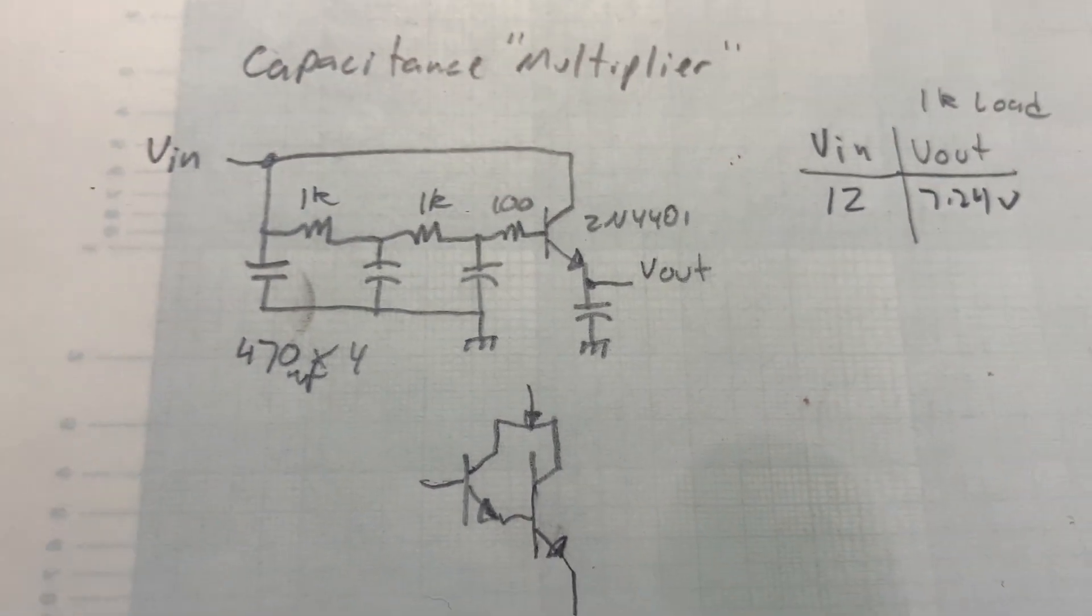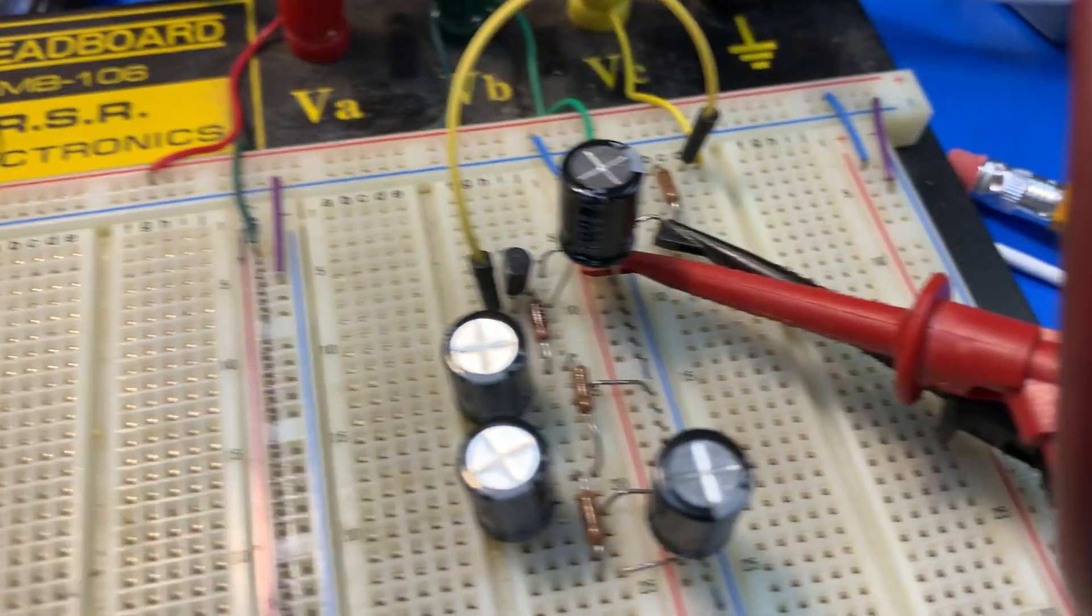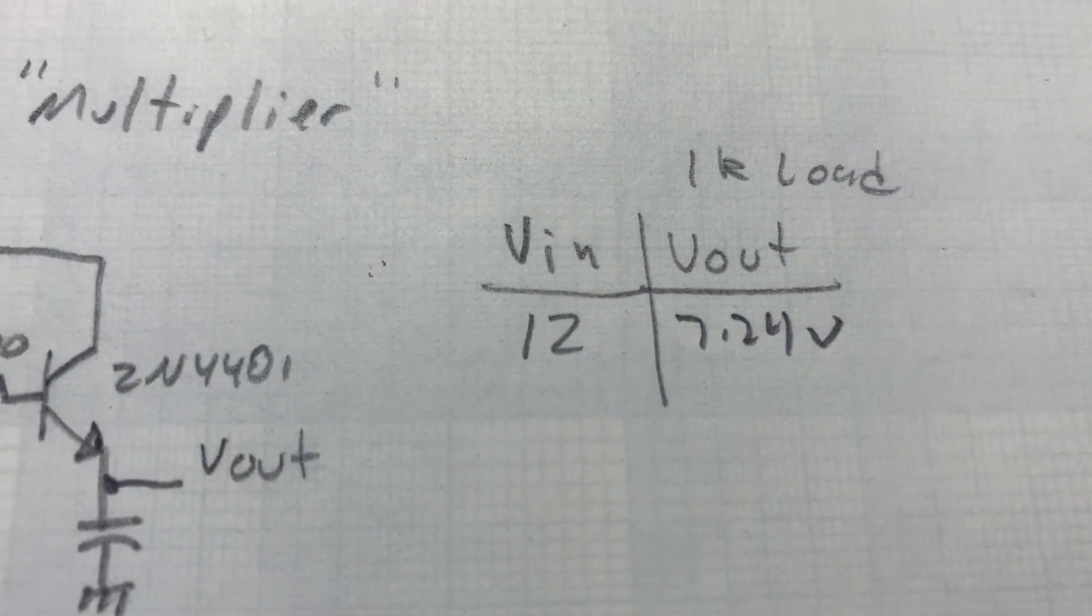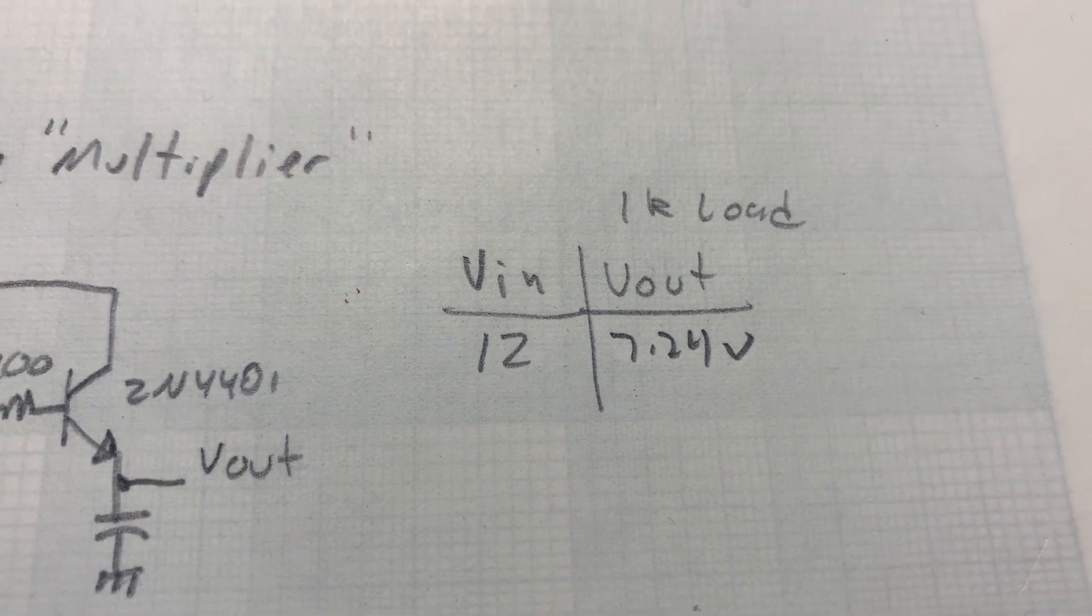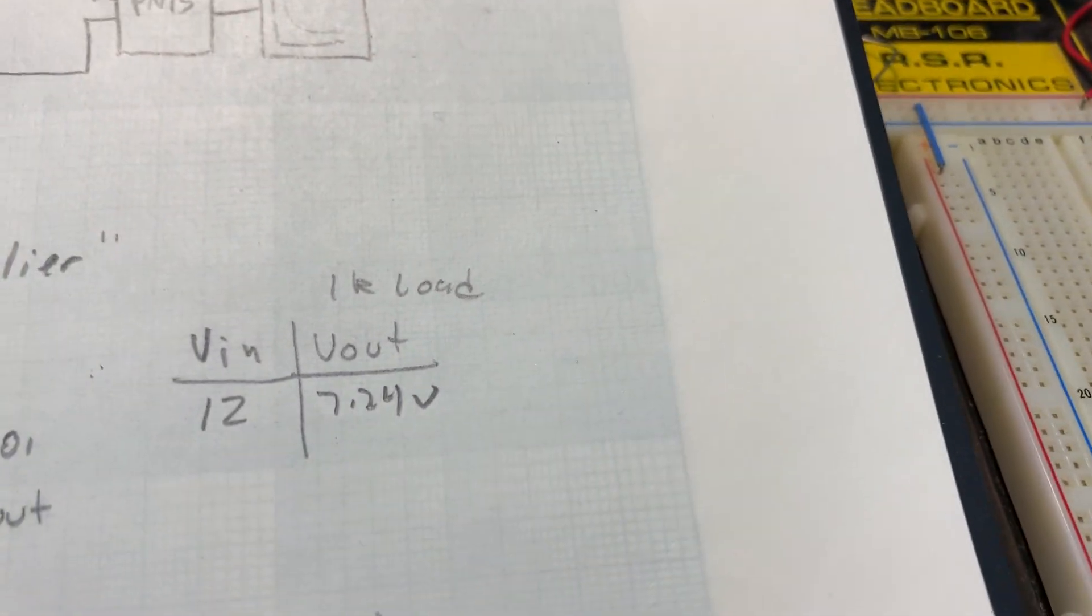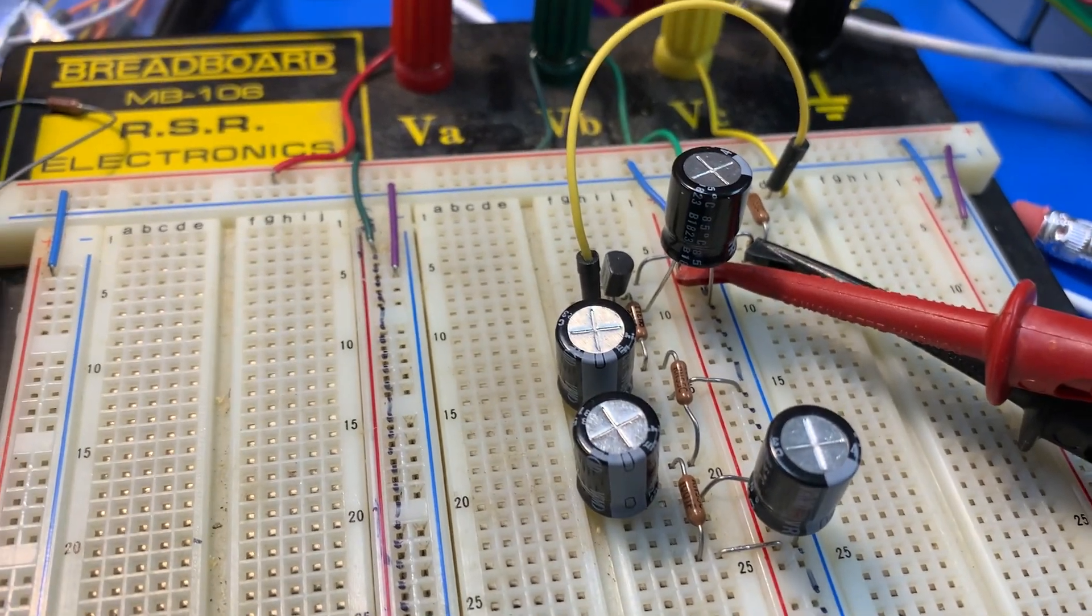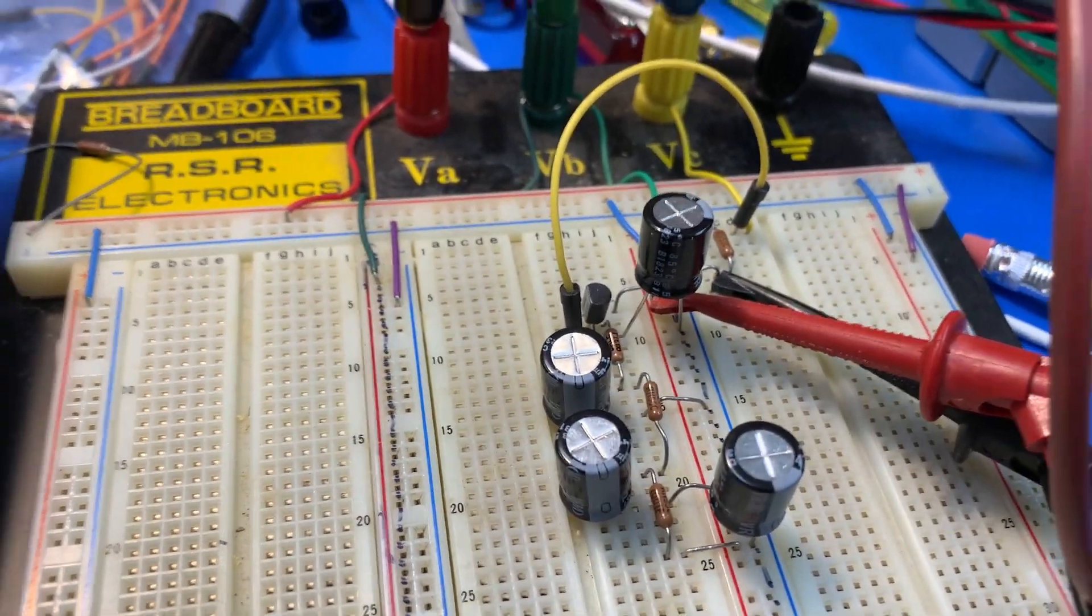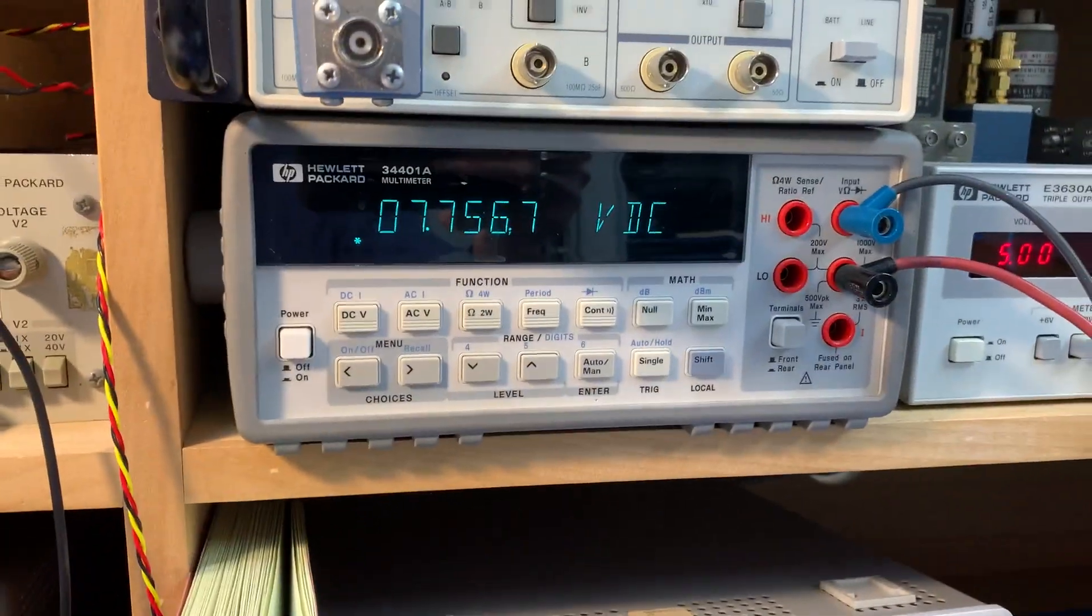I didn't have the exact values they had, so I've got it built up here. But 12 volts going in and about 7.24 volts coming out, or it's actually 7.75 now. So it's about seven and a half milliamps load here. That's the output voltage.